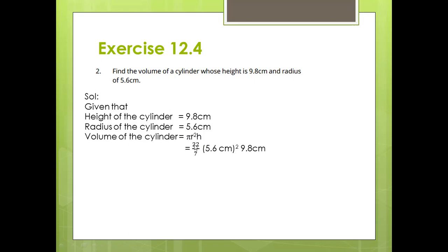Now you put values in this. Value of pi is 22 by 7. Value of radius is 5.6 cm but you will take the whole square of that value. Whole square means 5.6 multiply 5.6 — means that you multiply twice 5.6. Then height 9.8 cm. When you take the square of 5.6 cm, you multiply 5.6 into 5.6, multiply 22, multiply 9.8 and then divide by 7. So you get 965.89. That will be cm³ — here cm times cm gives cm², and cm² times cm gives cm³. So volume of the cylinder is 965.89 cm³.